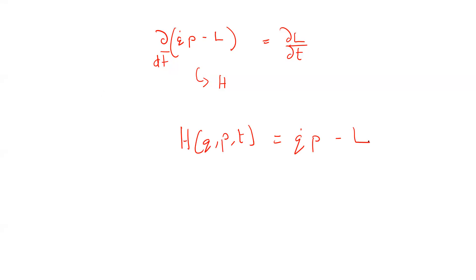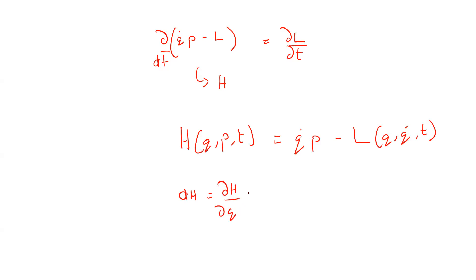The Lagrangian is, of course, a function of Q's, Q-dot, and T. Now, DH can be written — since H is a function of Q's, P's, and T's — as the total derivative using the chain rule of calculus, computing it using partial derivatives.